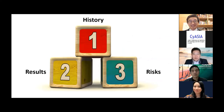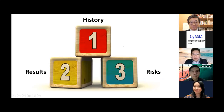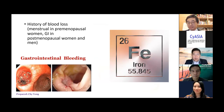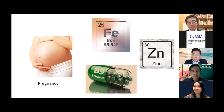First, history that indicates risk of iron and vitamin deficiency. Second, the results of mineral and vitamin deficiency. Premenopausal women with menstruation, GI bleeding in postmenopausal women, and men can all have risk of iron deficiency. The second risk factor is pregnancy — during pregnancy, you must be aware that patients can have risk of iron, zinc, and folic acid deficiency.